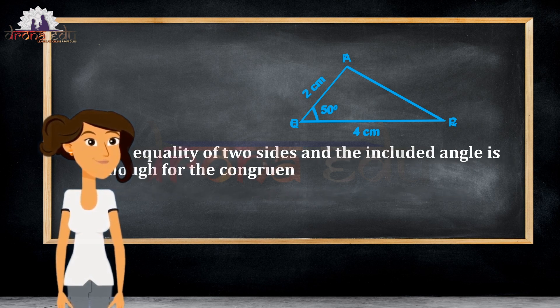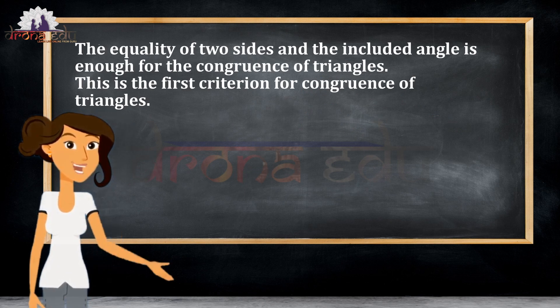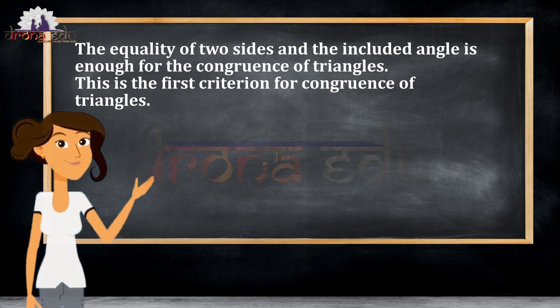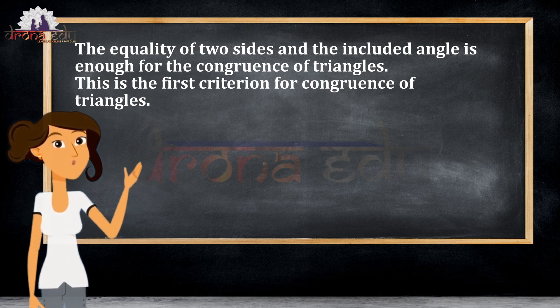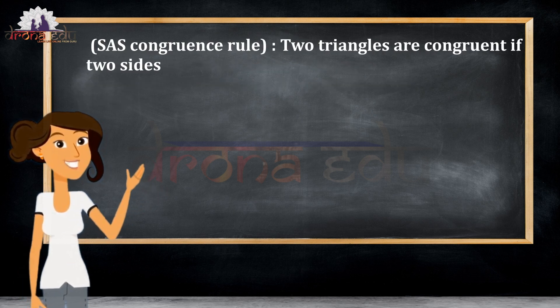So, the equality of two sides and the included angle is enough for the congruence of a triangle. This is the first criteria for congruency of a triangle.